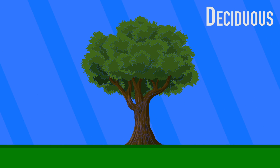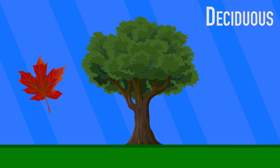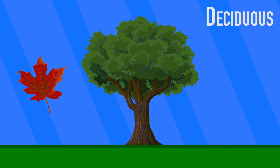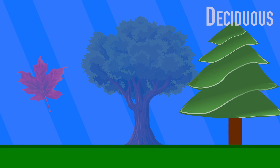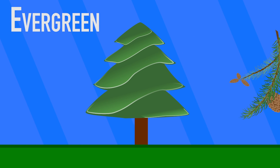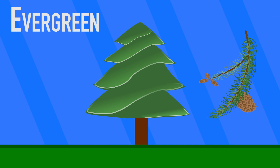Deciduous trees will generally have broad leaves, like oak, maple, or acacia. Leaves of these trees are generally susceptible to damage in cold or dry weather, or both, whereas evergreen trees will generally have weather-resistant needles or leaves to hold up in any weather.